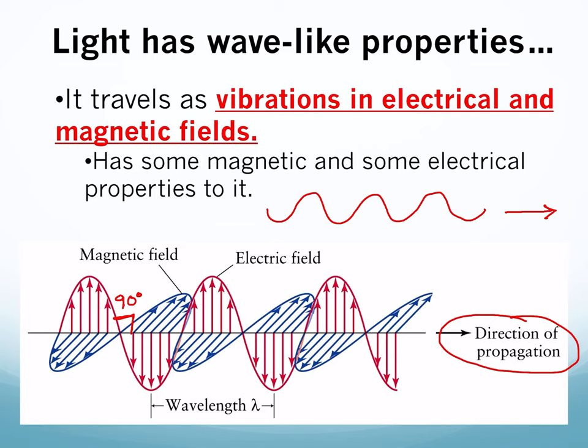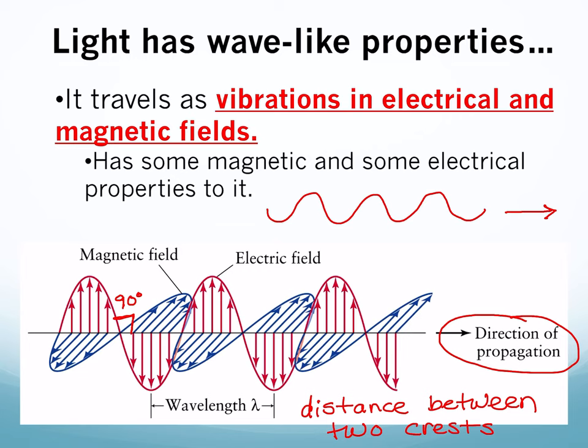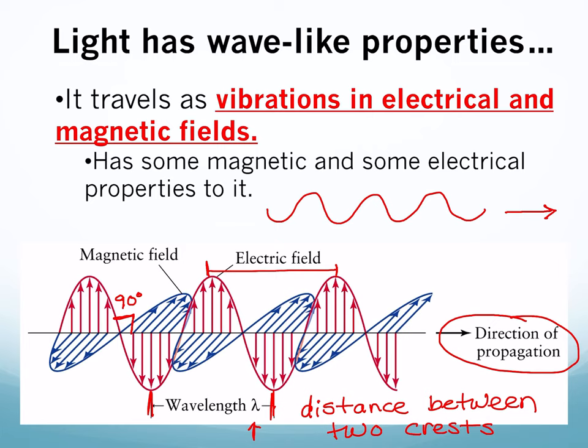Wavelength is the distance between two crests. Crests are the tops or the bottoms of a wave — here they're showing the bottom, so the distance between the bottom of this wave and the bottom of the next. You can measure the same distance from the tops — it'll be the same distance. Wavelength is abbreviated by the Greek letter lambda, that little upside-down Y shape.